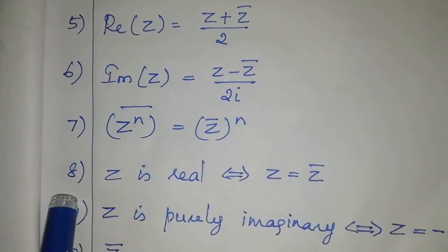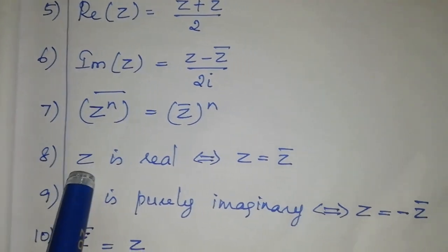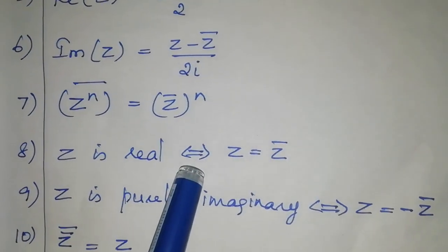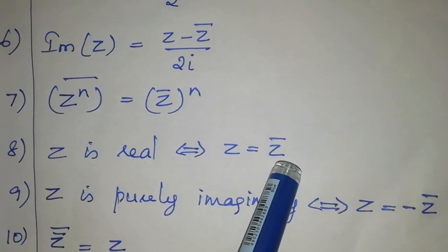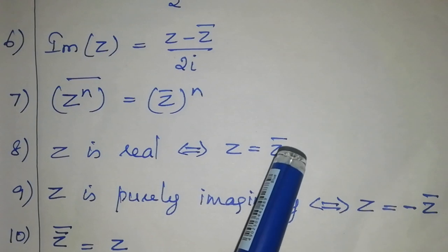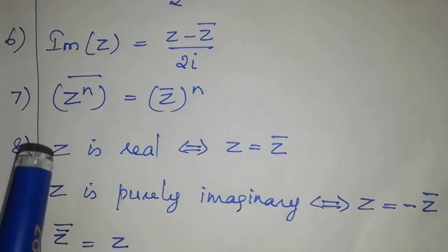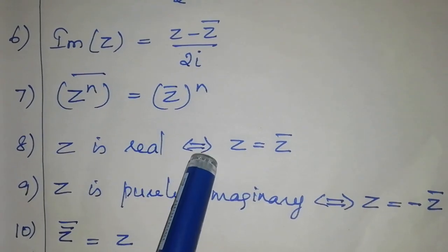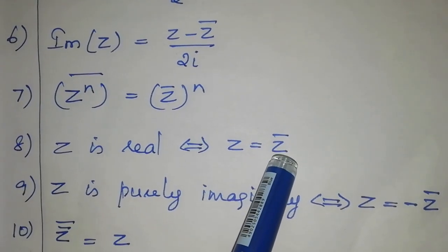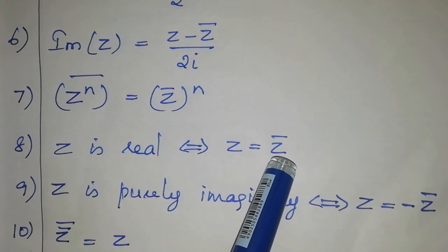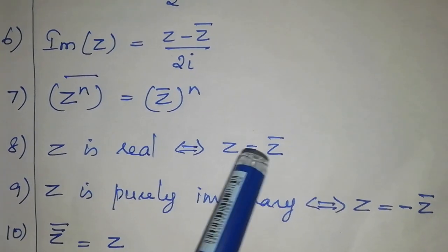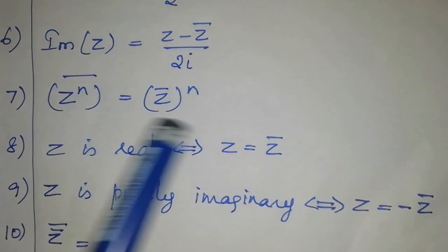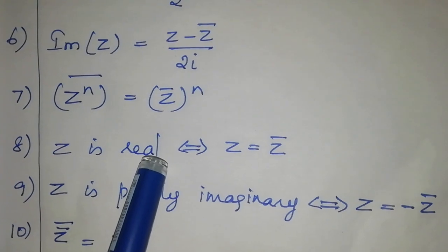The eighth property is: z is real if and only if z equals z bar. That means if z is real then z equals z bar, and if z equals z bar then z is real.